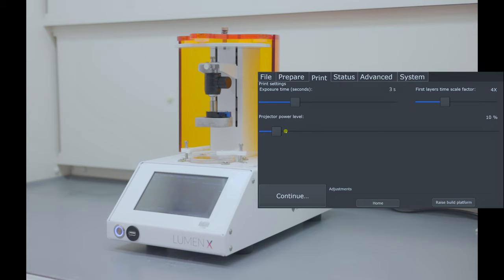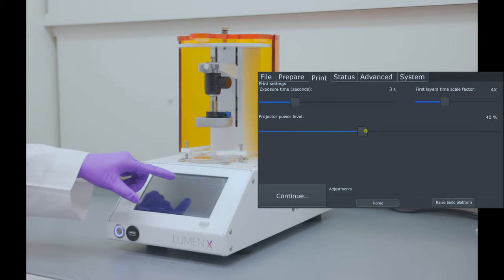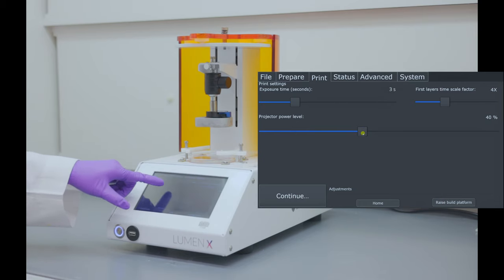We have a calibration sheet for this printer, which translates the percentage power to absolute units. So, we can adjust the power to be at 40%. We have changed the exposure time as needed, and the first layer time scale factor and the projector power.